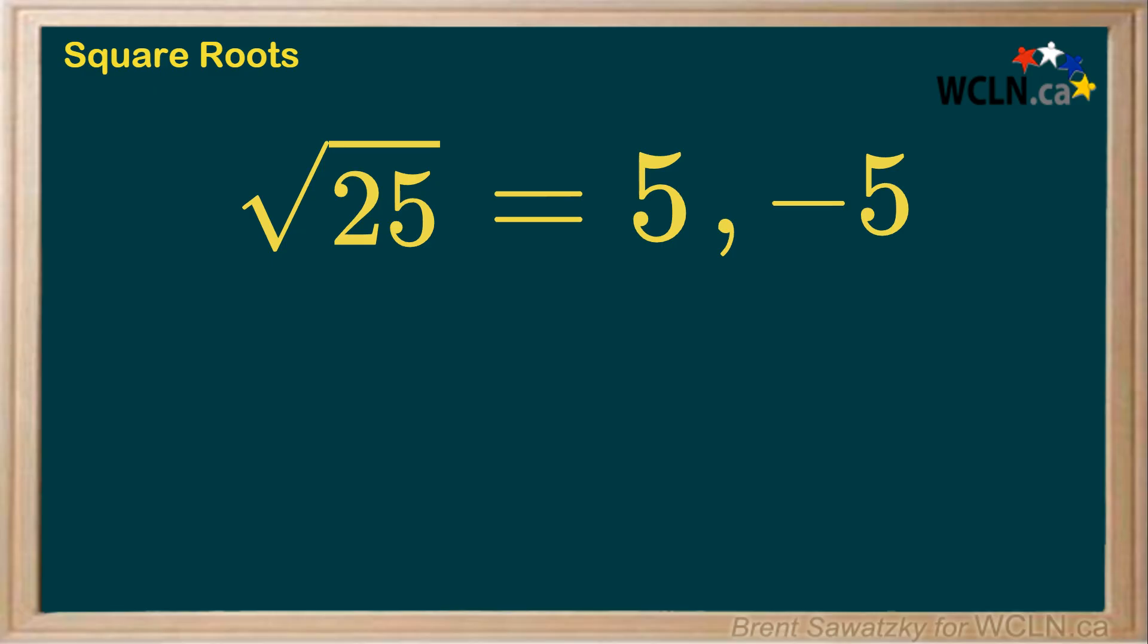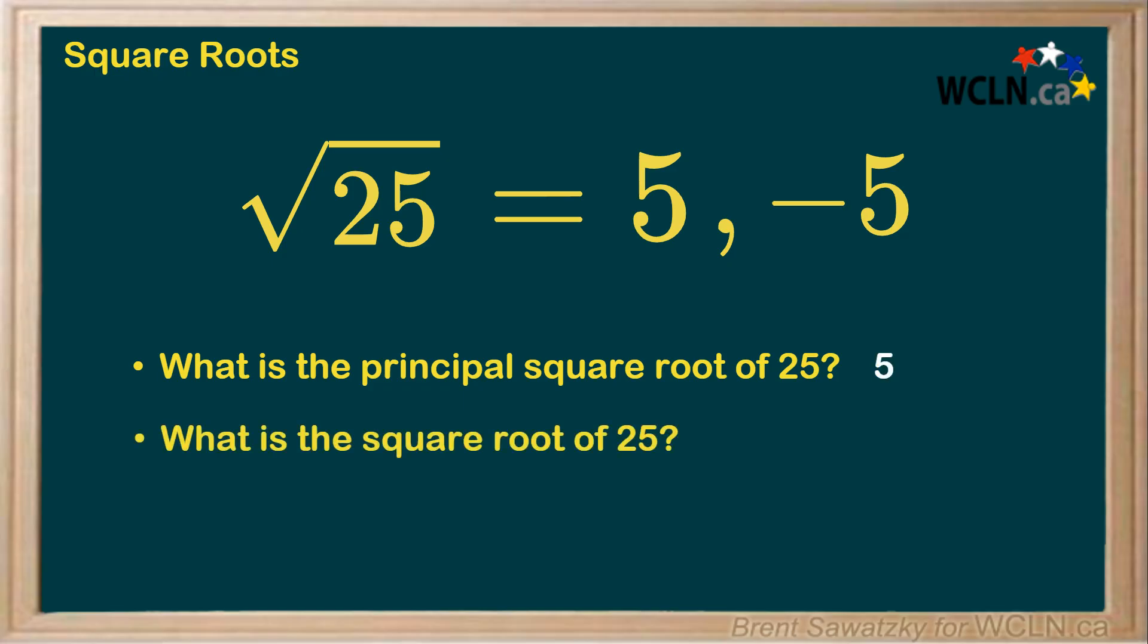So to clarify, if you get asked for the principal square root of 25, you would say 5. If you're asked for the square root of 25, you can assume that they mean the principal square root, and also say 5.